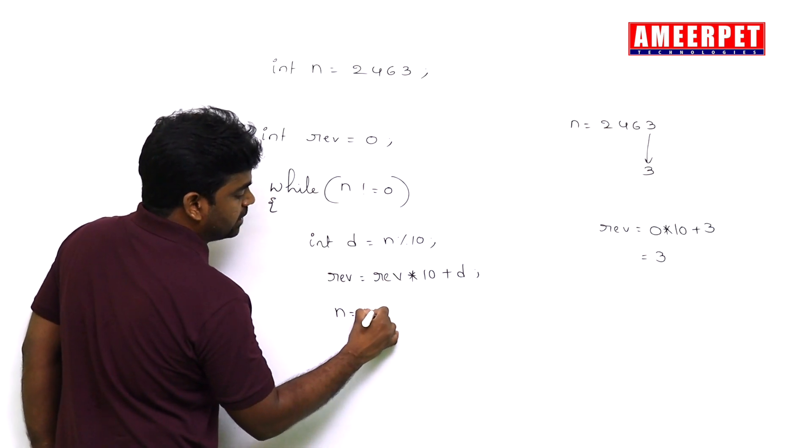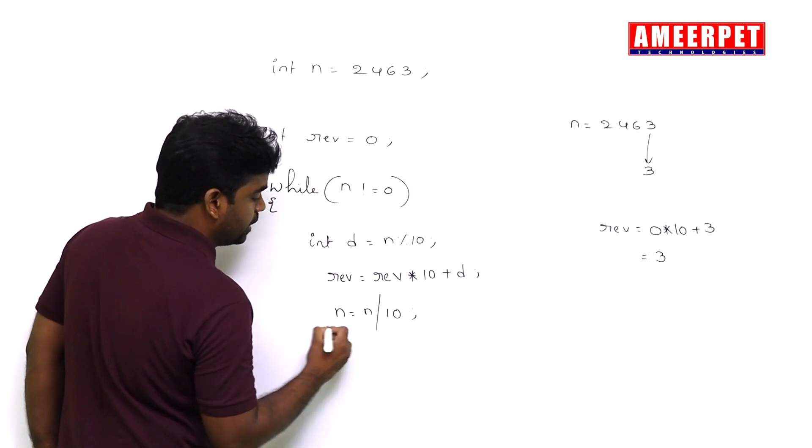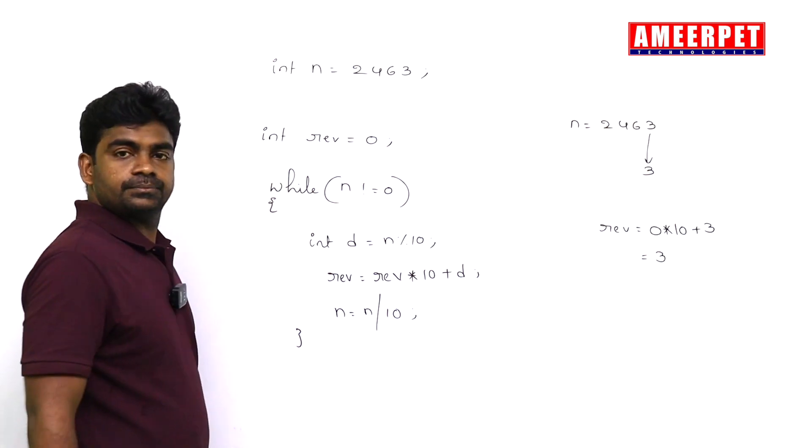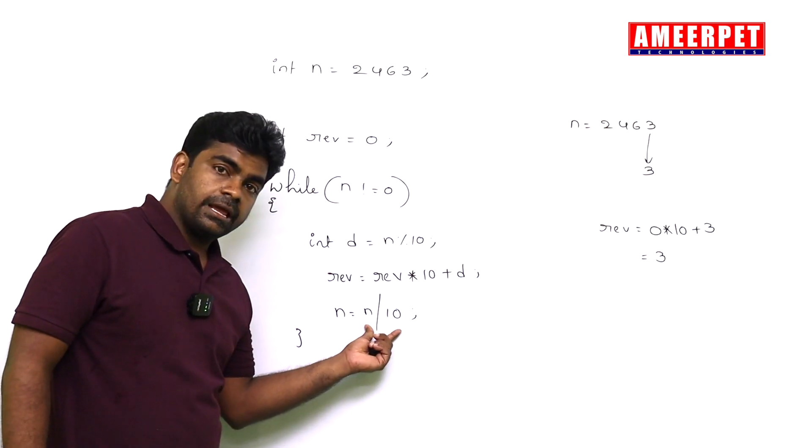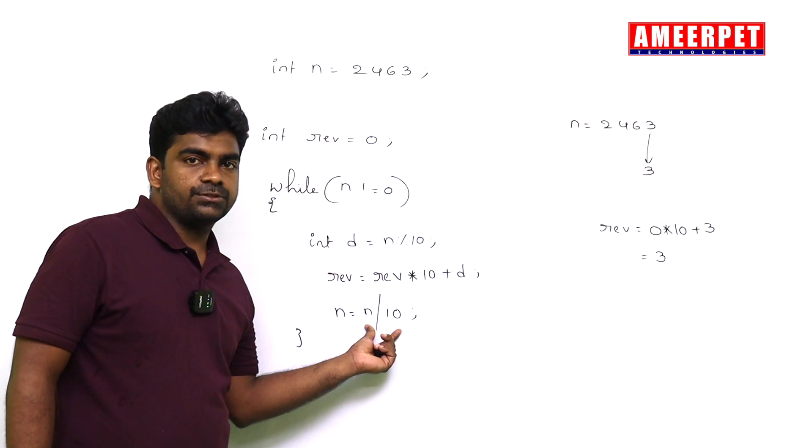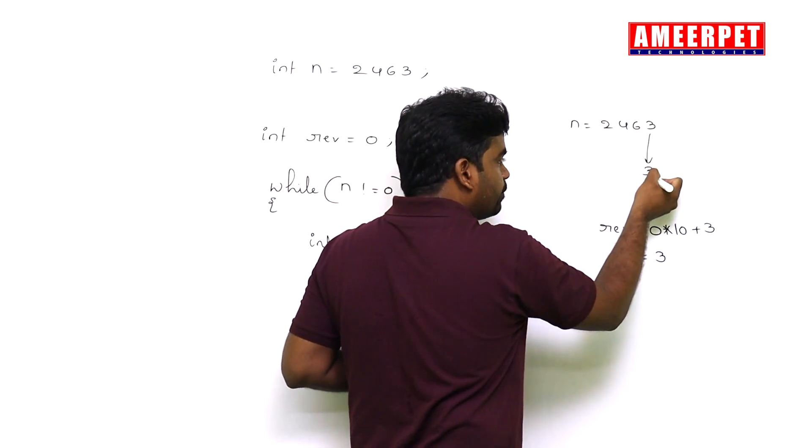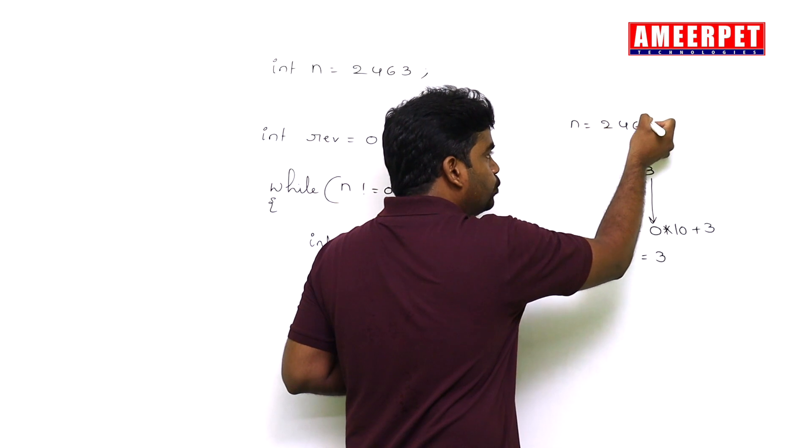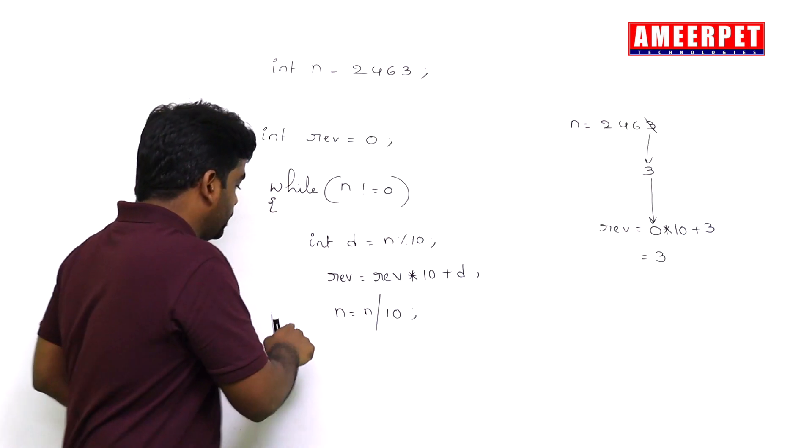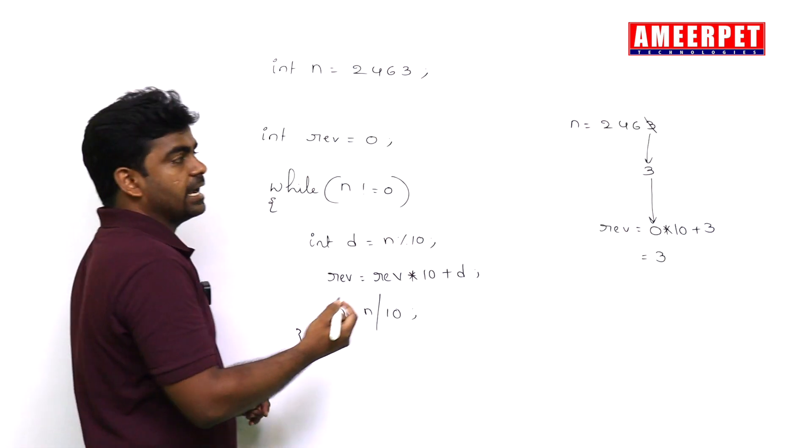Remove the digit. How to remove the digit? n equals to n by 10. So whenever after working with this digit we remove the digit, so in the iteration next one will come.